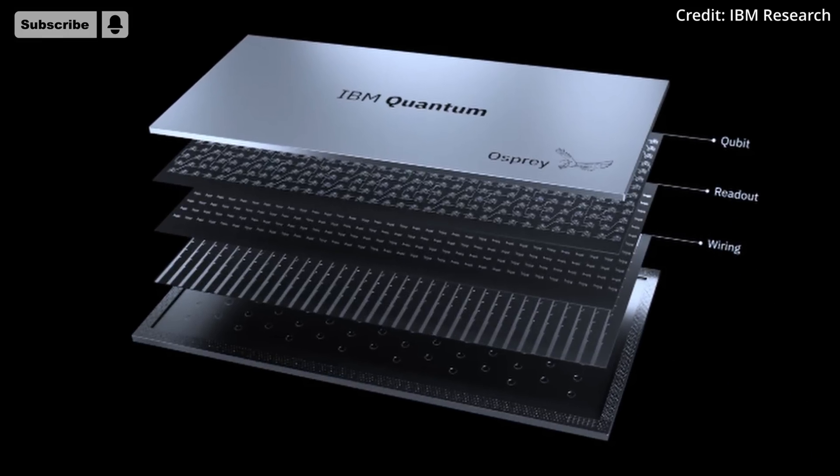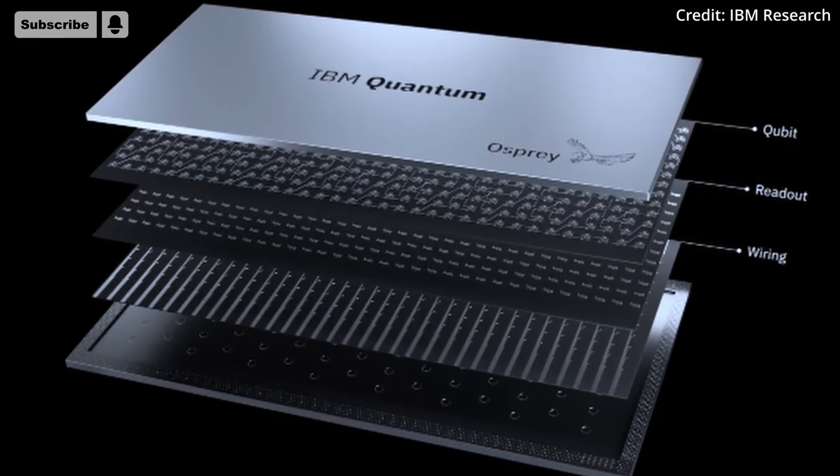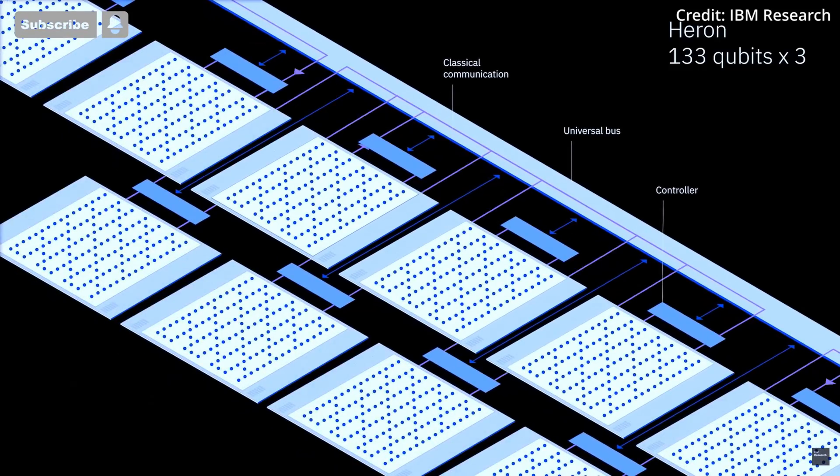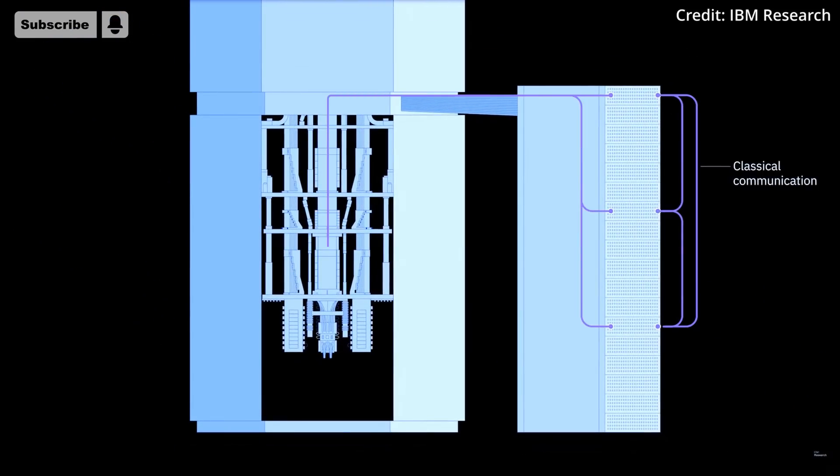That's more than triple the number of qubits that the Eagle Quantum Computing Chip has. IBM said it built on top of the 127-qubit Eagle's architecture by keeping qubits on a single plane with the help of multi-level wiring.